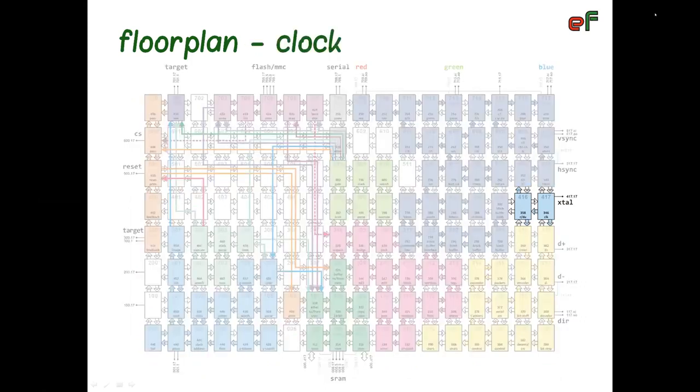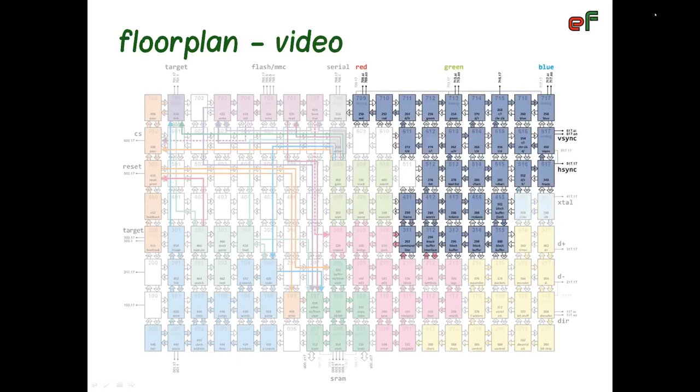Clock module provides timing signal necessary for keyboard and screen control. Video module generates RGB and synchronization signals for VGA screen. It includes block and command line buffers, token strings, character bitmaps, and definition of tag colors. It also generates a blinking cursor.